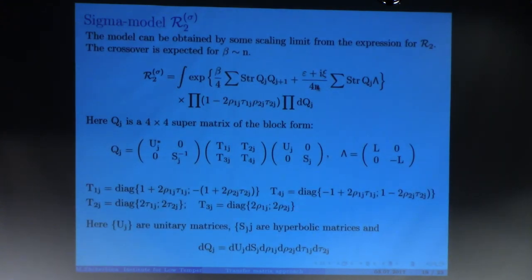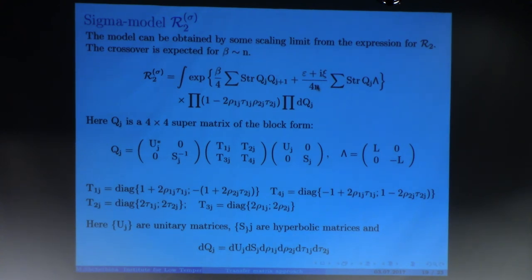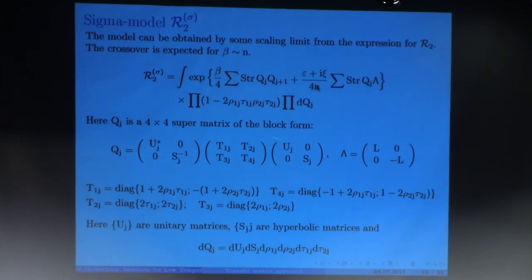For the second correlation function, we began to write the paper, and it was in preparation when Tatiana met Zirnbauer, and she asked why we did not do the sigma model. What is the sigma model? If you do some scaling in the expression for the second correlation function, then after some scaling limit you obtain a model very similar to the second correlation function but simpler. In this situation we have an expression similar to statistical mechanics — here, super-trace, super-determinant — but I am not going to work with this directly, just to show people who are specialists how it looks.